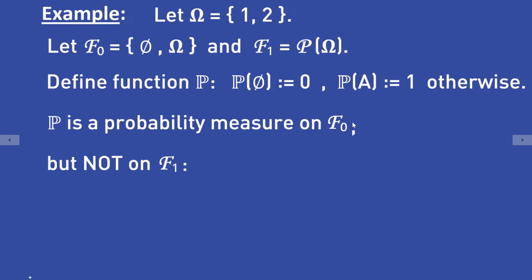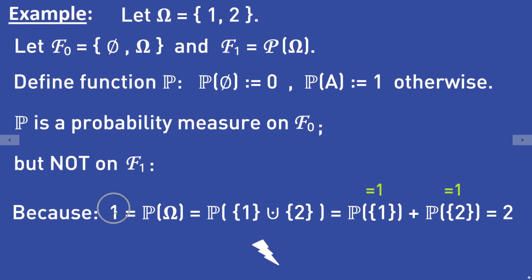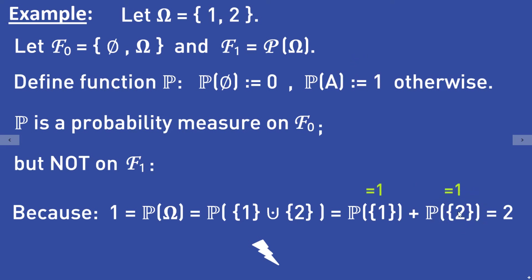However, the function P is not a probability measure on F1, the power set of omega. This is because 1 equals the probability of omega, which equals the probability of the disjoint union of the subsets {1} and {2}, which by sigma additivity equals the probability of {1} plus the probability of {2}. But both of these equal 1, so their sum equals 2, giving us 1 equals 2 — a contradiction. So this function P cannot be a probability measure on the power set.